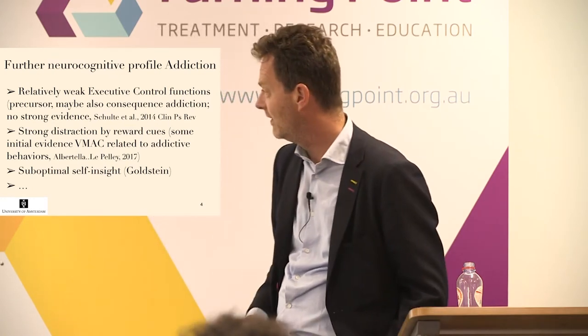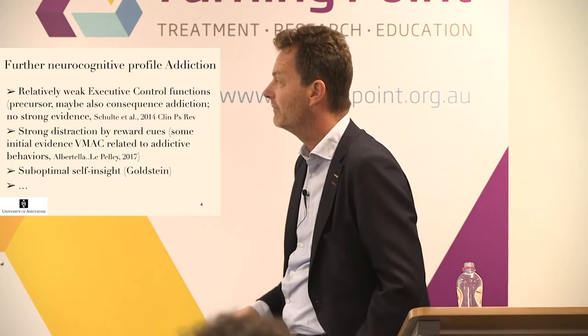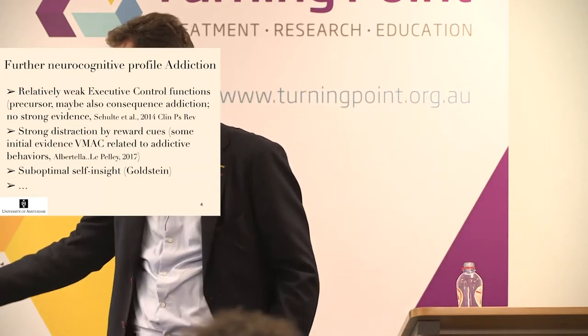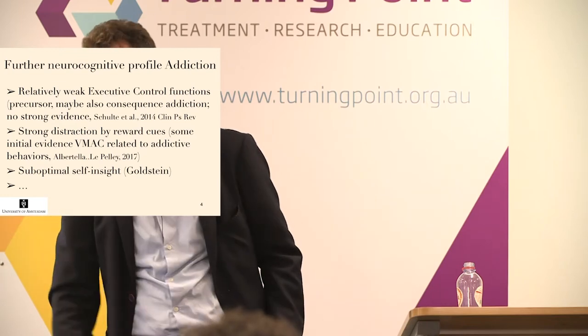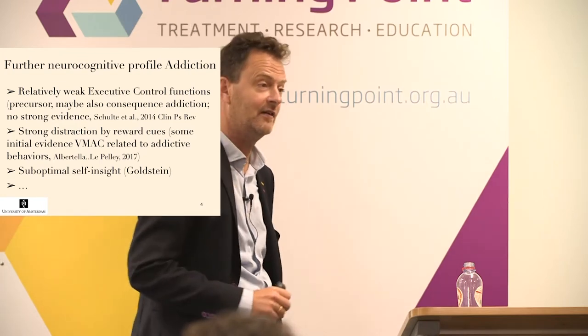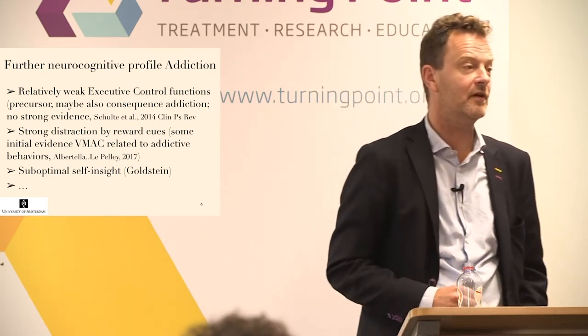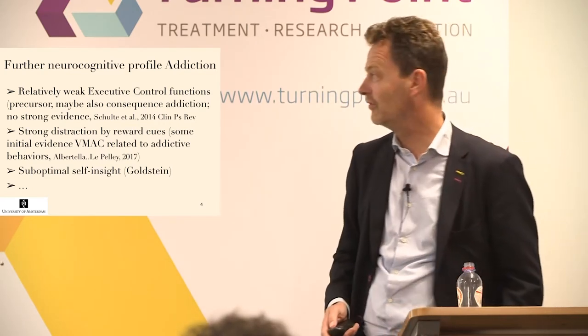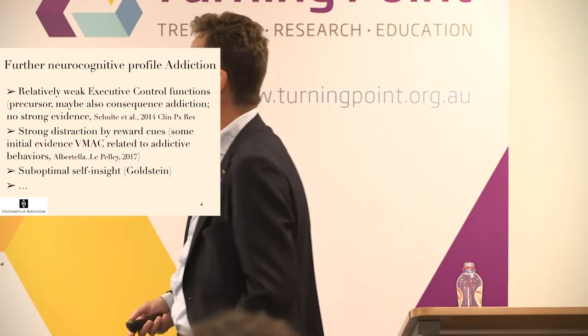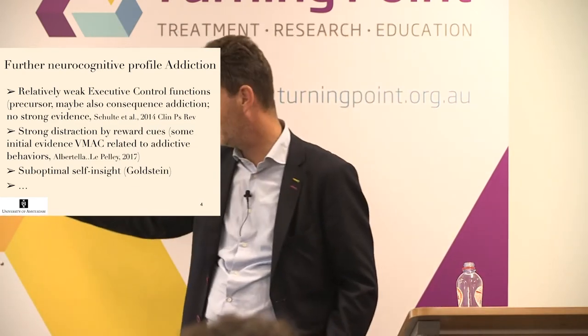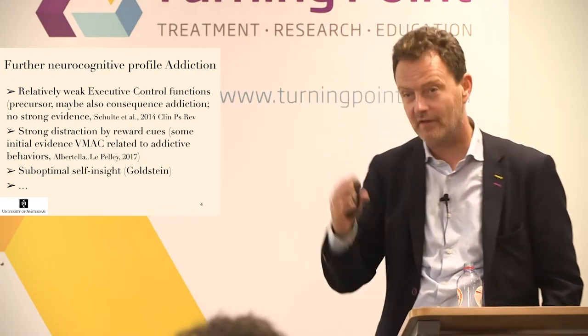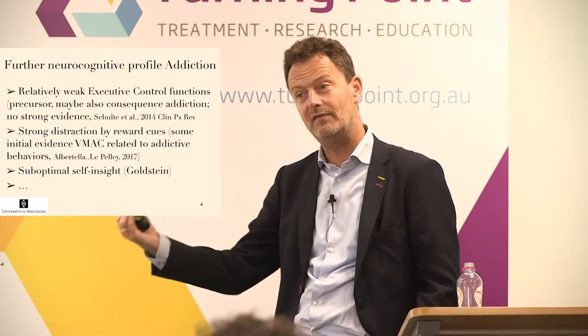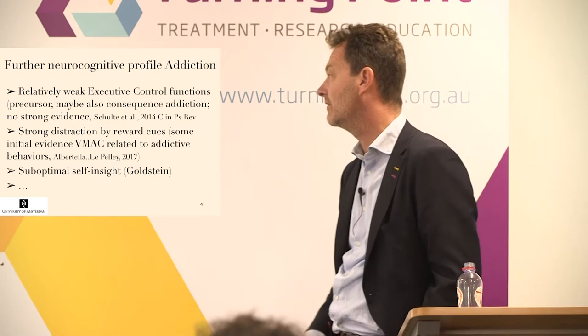There's also other interesting work going on, like suboptimal self-insight, which is difficult in treatment. There are neural correlates — the insula is very important — but there might be different aspects to self-insight. That brings you to the question: could you specifically target these functions, and would that have an effect in addiction?